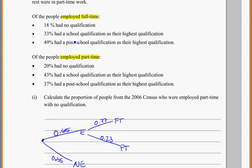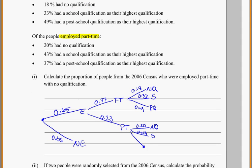And now we break it out between our full-time employees have 18% with no qualification. So I'll say NQ for no qualification. That's 0.18. For school, it's 0.33. And for post-qualifications, we'll say 0.49. And then again, for part-time, we've got no qualifications at 20%. School, 0.43. And then, post-qualification, we have 0.37.